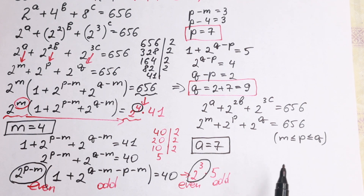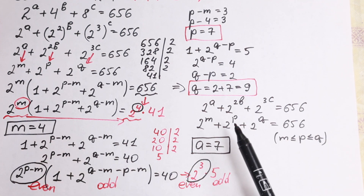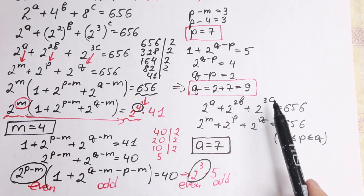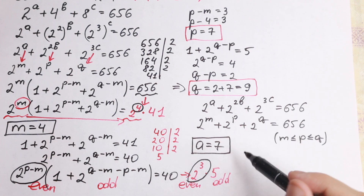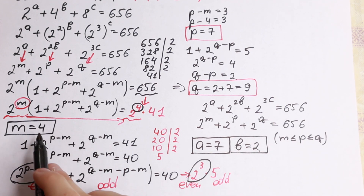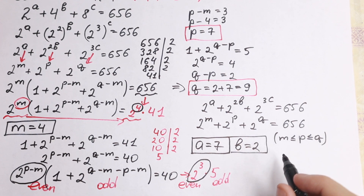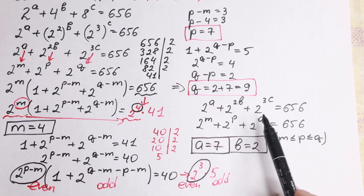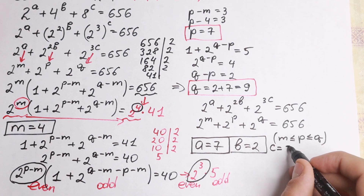We still have two values: 4 and 9. For 2b equals 4, b equals 2, which is a natural number. If 4 equaled 3c, c would not be a natural number. For 3c equals 9, c equals 3. So b equals 2 and c equals 3. This is our one and only solution in natural numbers.